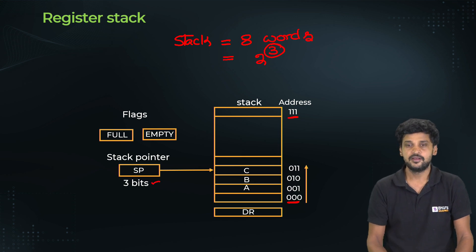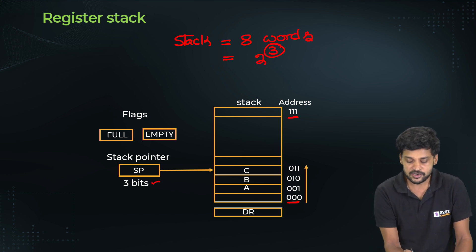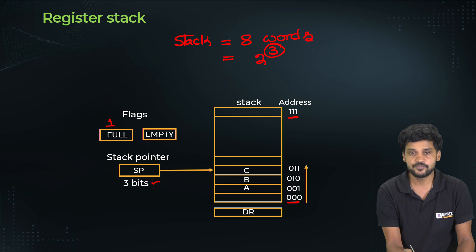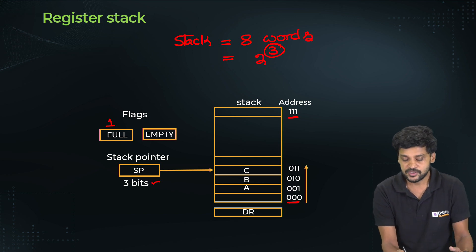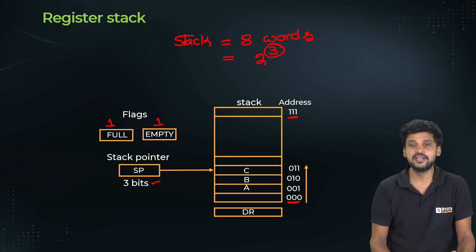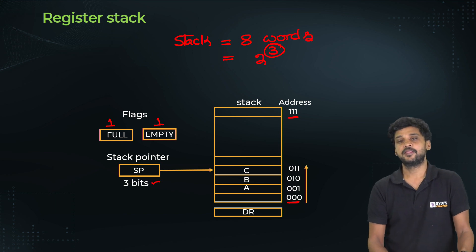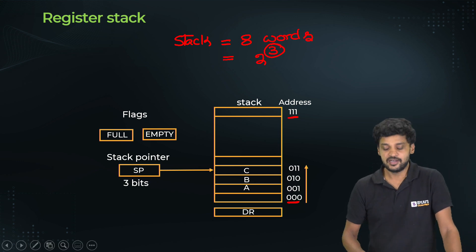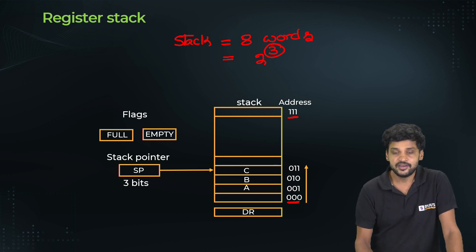The full flag is a 1-bit register; it equals 1 if the stack is completely full. The empty flag is another 1-bit register; it equals 1 if the stack is completely empty. Now let us understand what happens at the boundaries of the stack, starting from when the stack is completely empty.